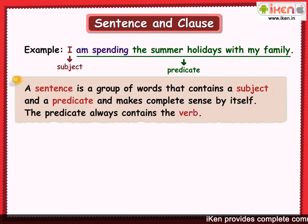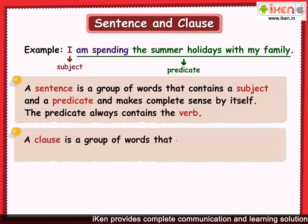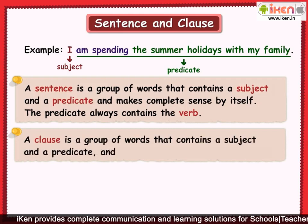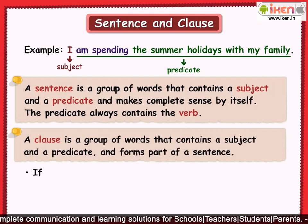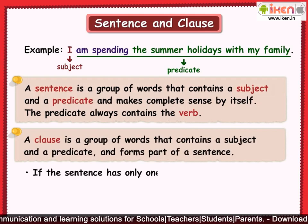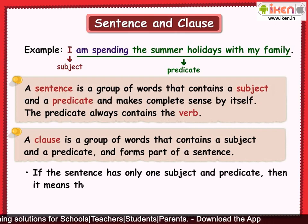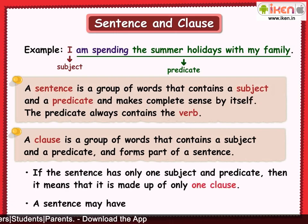Let's revise the definition of a sentence. A sentence is a group of words that contains a subject and a predicate and makes complete sense by itself. The predicate always contains the verb. Now let's revise the definition of a clause. A clause is a group of words that contains a subject and a predicate and forms part of a sentence. If the sentence has only one subject and predicate, then it is made up of only one clause. A sentence may have one or more than one clause.